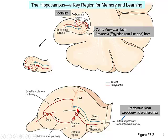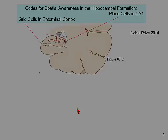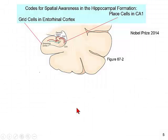The reason we are so interested in the hippocampus is that, as Ralph explained, it is very important for spatial memory. That work earned the 2014 Nobel Prize for Physiology or Medicine. In the hippocampus there are so-called place cells and grid cells. The place cells are in CA1, the largest region. The grid cells are upstream in the entorhinal cortex.